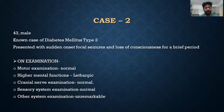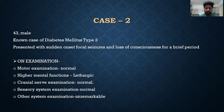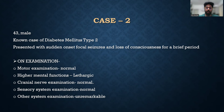The second case is a 43-year-old male who was a known case of diabetes type 2, who presented with sudden onset focal seizures and loss of consciousness for a brief period. On examination, motor examination was normal, higher mental functions showed the patient was lethargic, cranial nerve examination was normal, and sensory and other systemic examinations were normal and unremarkable.